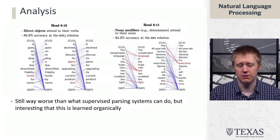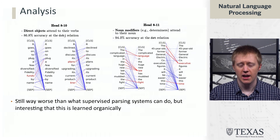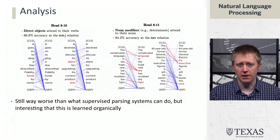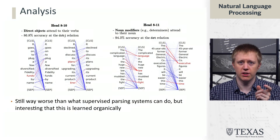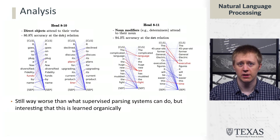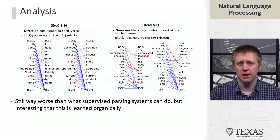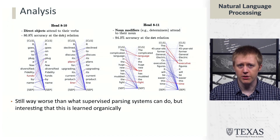Another analysis tied attention patterns to dependency parsing. You might expect a word to attend to things syntactically relevant to it — in the dependency formalism, a word is either a parent or child of another word. They found some heads that could, for verbs, pick out their direct objects, or for nouns, pick out their modifiers. The results aren't better than supervised parsers, but this syntax is learned in a totally unsupervised way internal to the model, which is very cool.